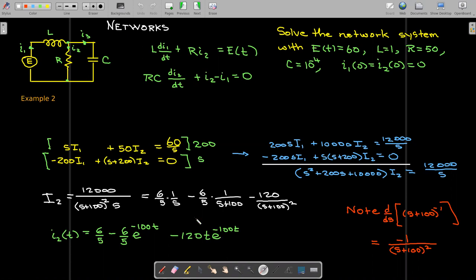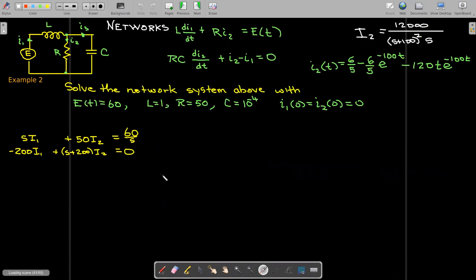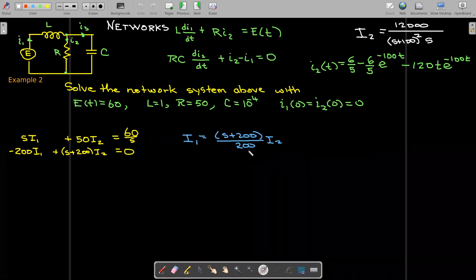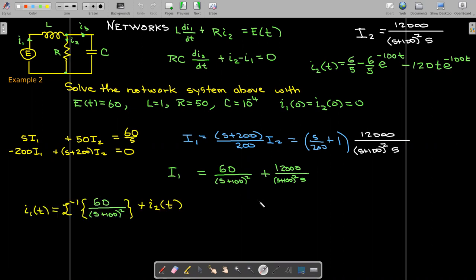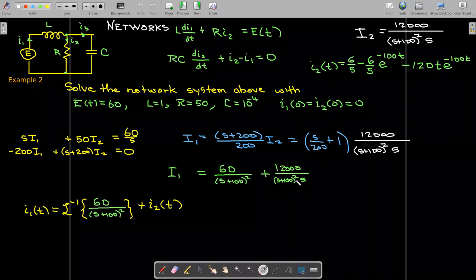Now to find I1, instead of using elimination, I'm just going to solve the second equation for I1. So I1 algebraically then would be s plus 200 over 200 times I2. And remember we had an expression for I2 when we found the current lowercase I2. So let's go ahead and just multiply those out and write them as two fractions.